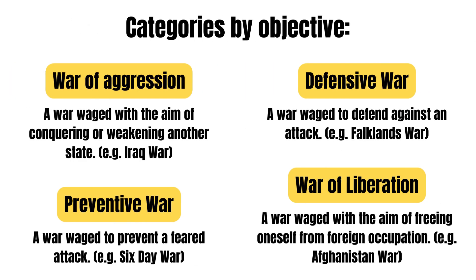You can also categorize them by objective. There are wars of aggression, a war waged with the aim of conquering or weakening another state — for example, the Iraq War. Defensive wars are a war waged to defend against an attack — for example, the Falklands War.